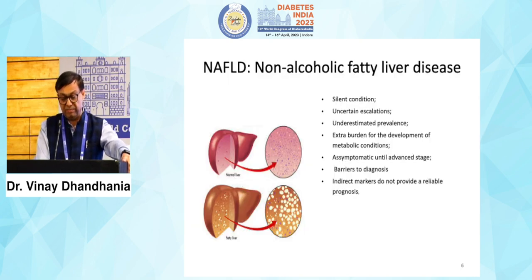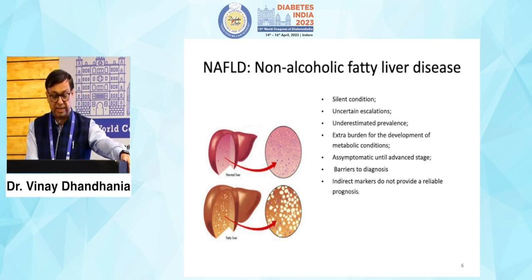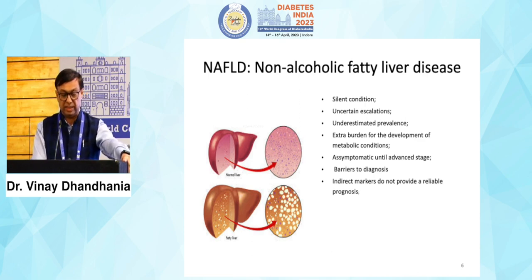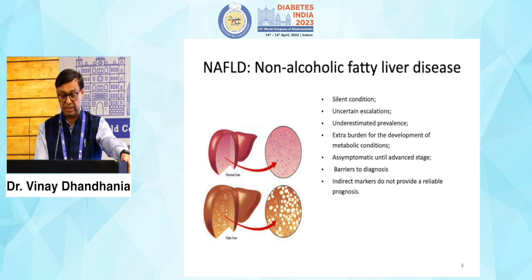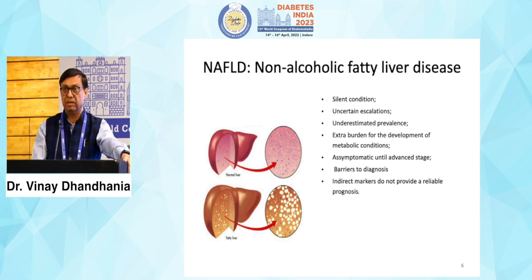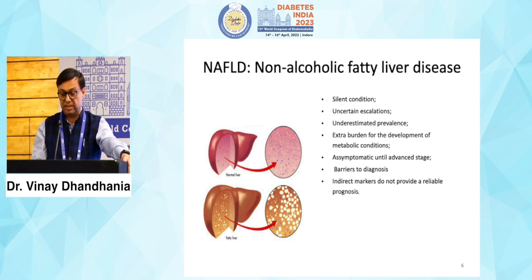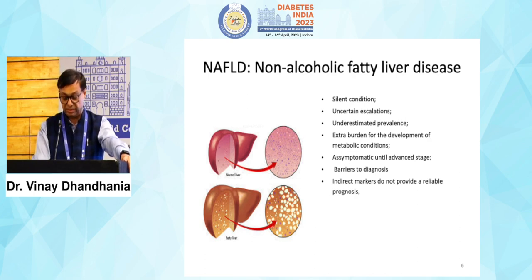NAFLD is basically a silent condition. There is uncertain escalation and clinically underestimated prevalence, with extra burden for development of metabolic conditions. It is asymptomatic until advanced stages. Patients will come with simple anemia, and when you evaluate for anemia, you will find that the patient already has varices. This is how you actually pick up fatty liver in the later stages of disease.